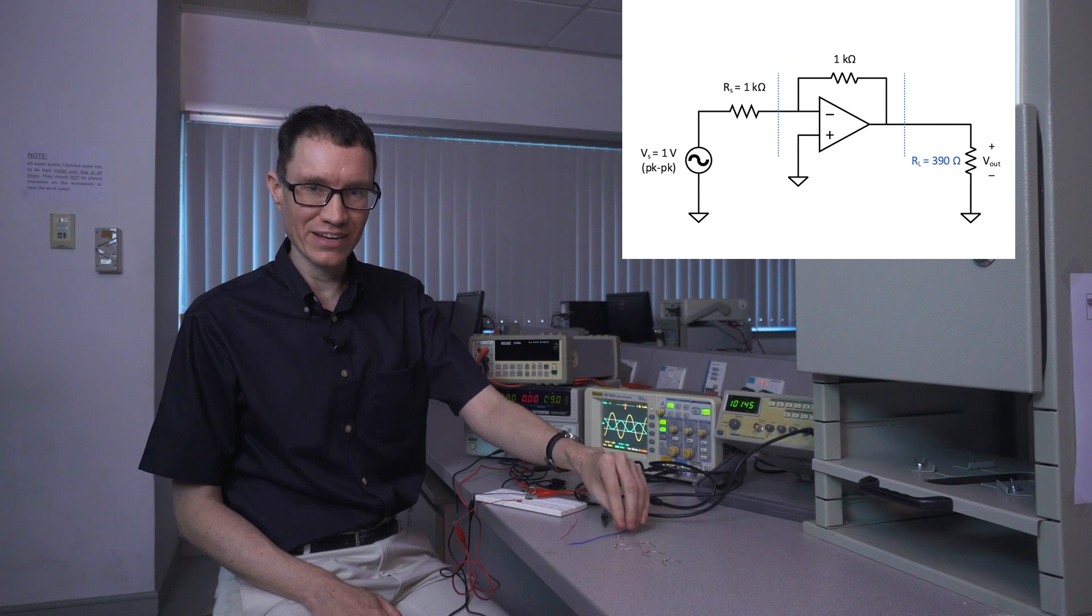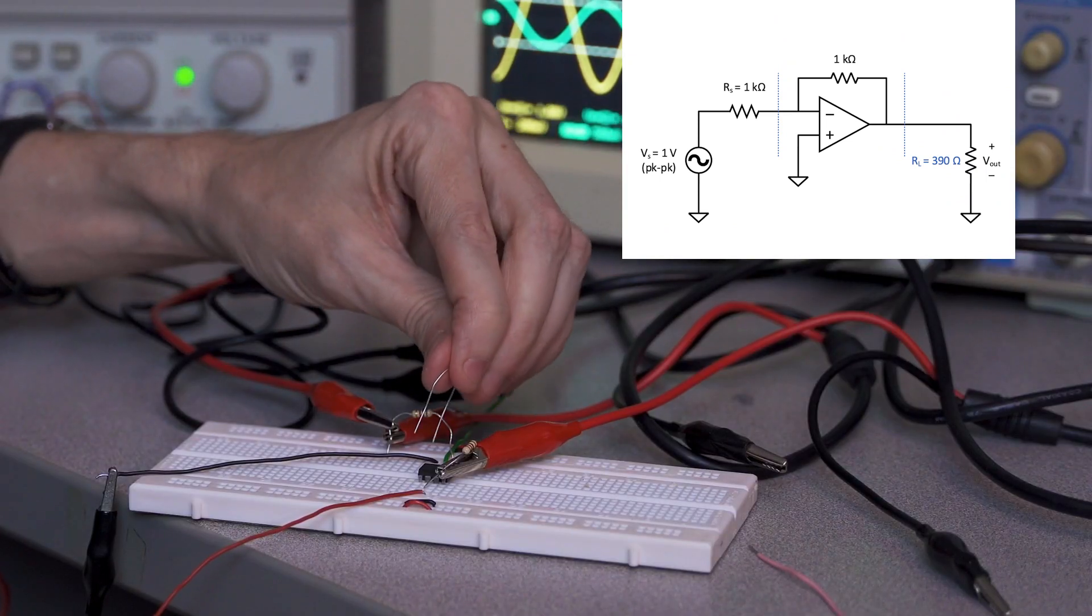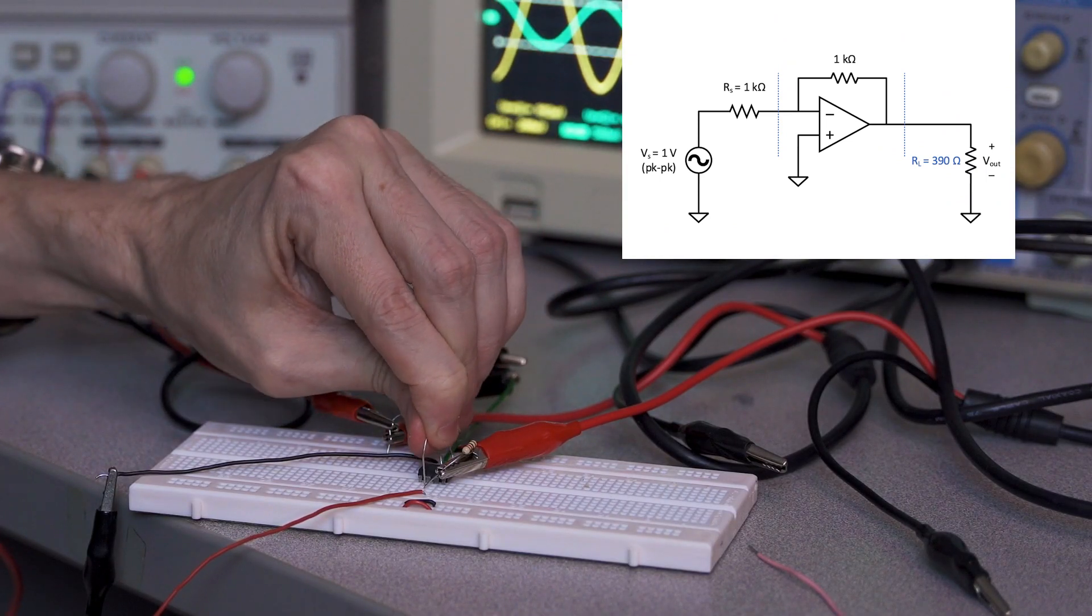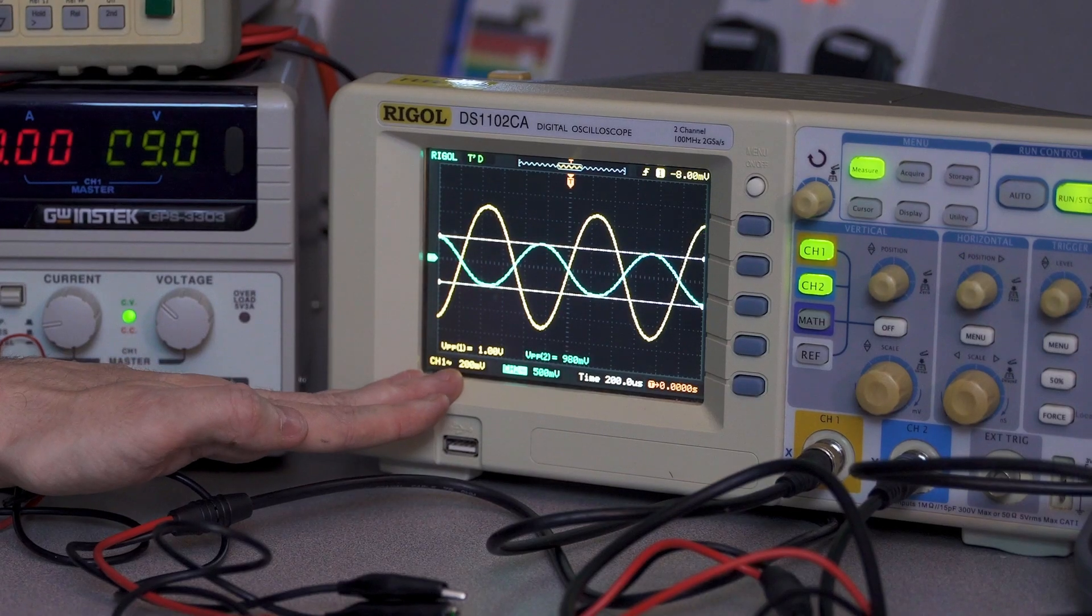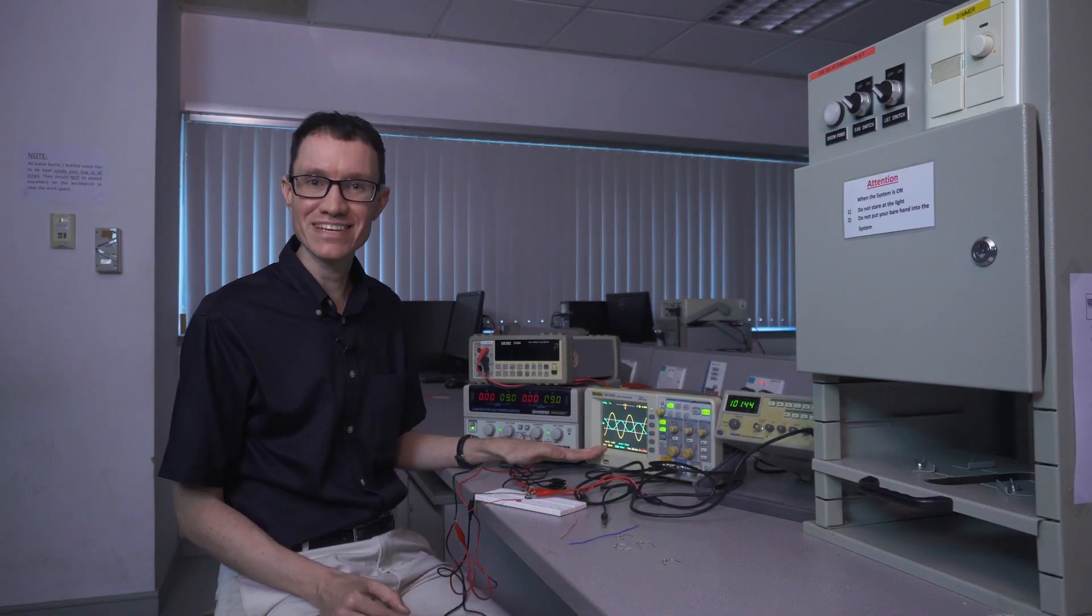Let's try the 390 ohm resistor. Again, I can confirm that these two voltages are the same.